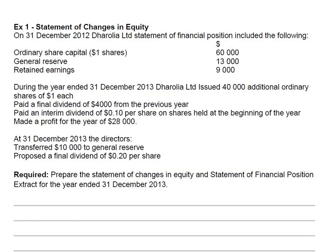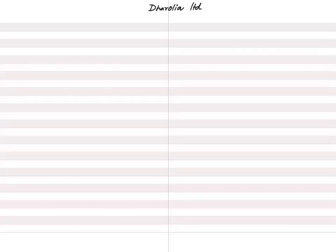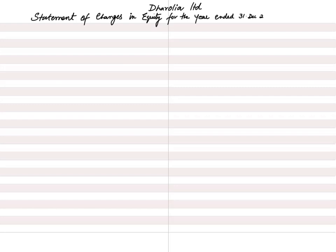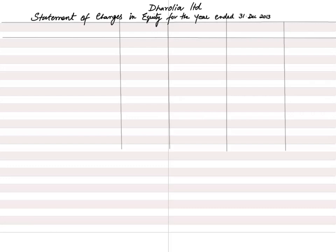I recommend you take a printout of this question — the PDF link is available in the video description — so you can refer to it as I solve it. When making the statement of changes in equity, start with the company name at the top, then write the heading 'Statement of Changes in Equity'. The heading is only written if it is not already given in the exam format.